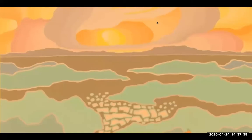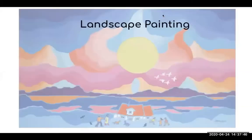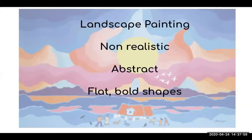Now let's compare notes. I noticed that his style is landscape painting, meaning that he paints scenes in nature. They're for the most part not very realistic, though I can recognize certain elements — they're almost abstract. His shapes and lines are very flat and very bold, almost with a childlike quality, which I love.